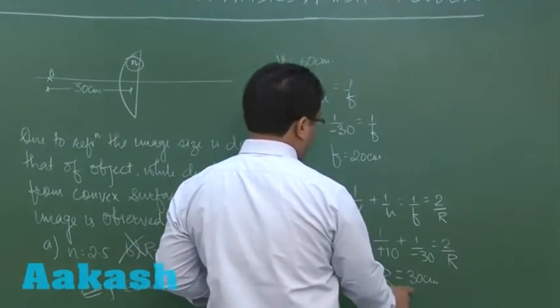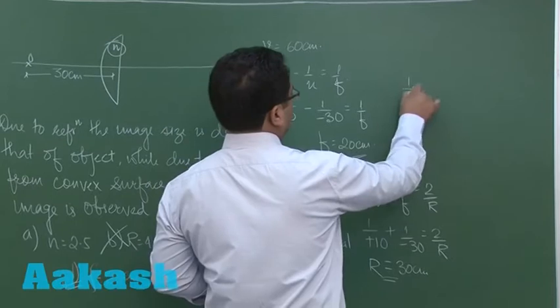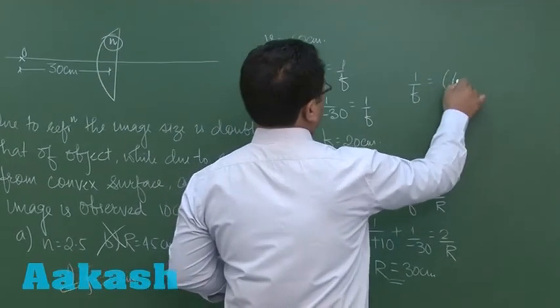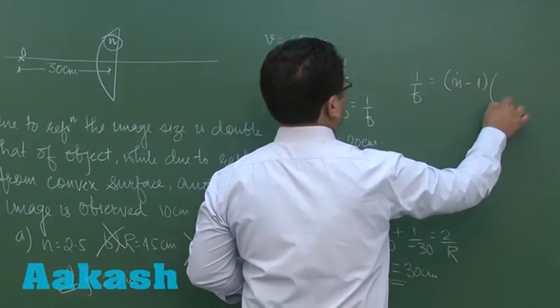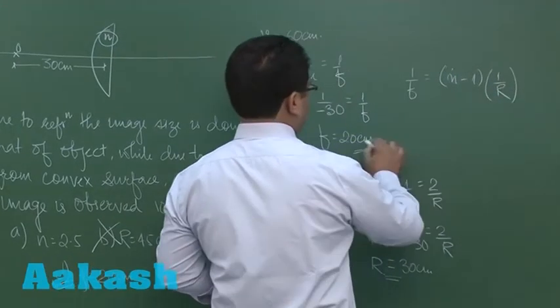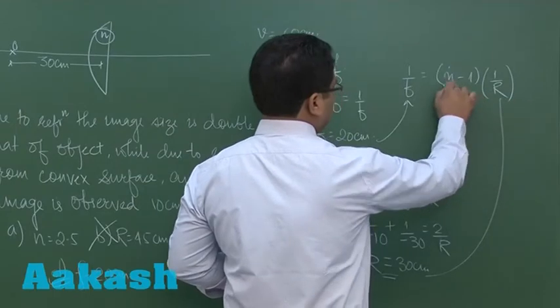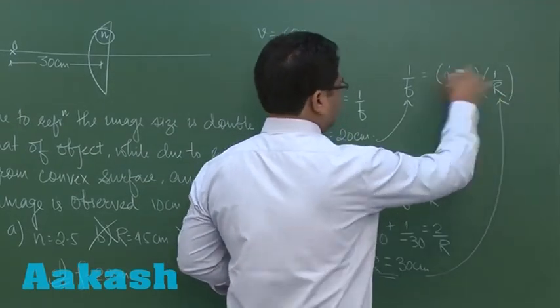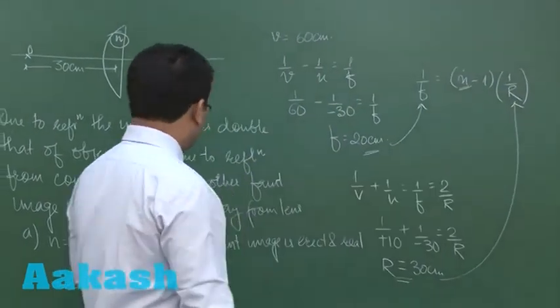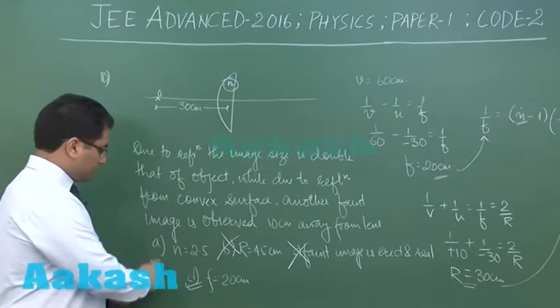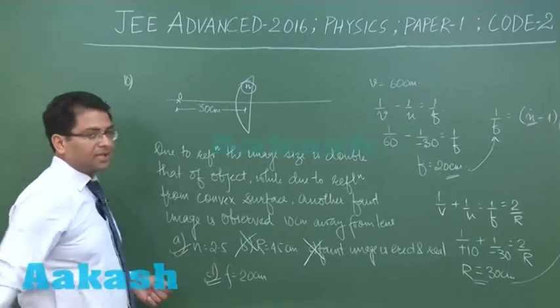The focal length of the lens the refractive index has to be calculated and the radius is 30 cm. When you put that very easily you will get n as 2.5 so that will even give us option number a.